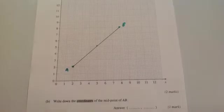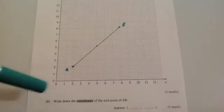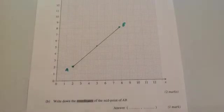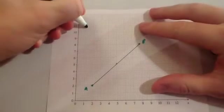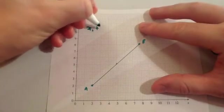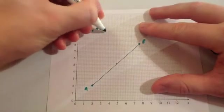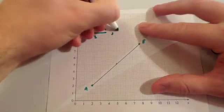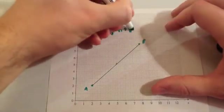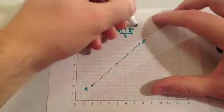We've got another question, we've got A and B drawn, and it says find the midpoint of A, B. So remember the formula was x1 plus x2 over 2, and then y1 plus y2 over 2. And that would be the midpoint.